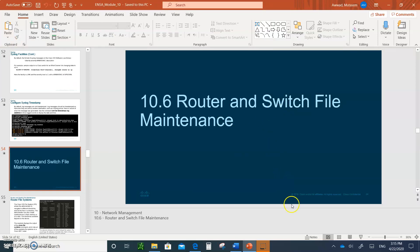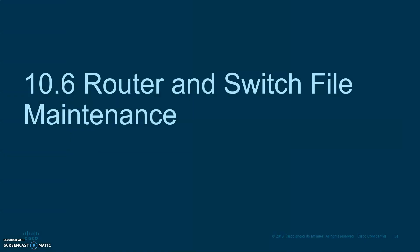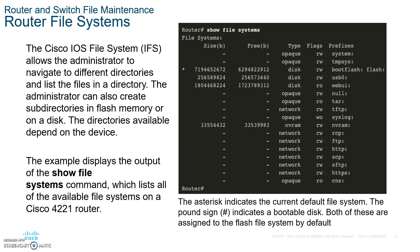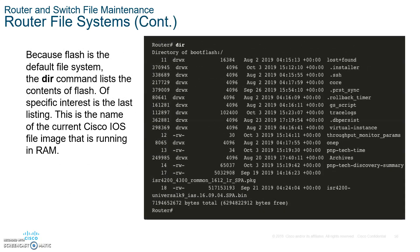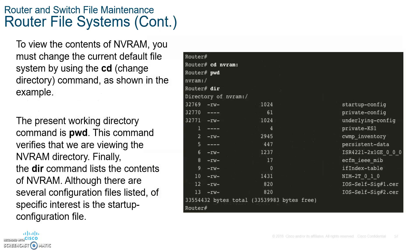Now let's talk about router and switch file maintenance. When you type the command show file system, this lists all the available IOS file system entries. Additional commands: DIR lists all directory files or folders; CD changes directory; and PWD shows the present working directory — for example, when you type PWD it might show you are in NVRAM.